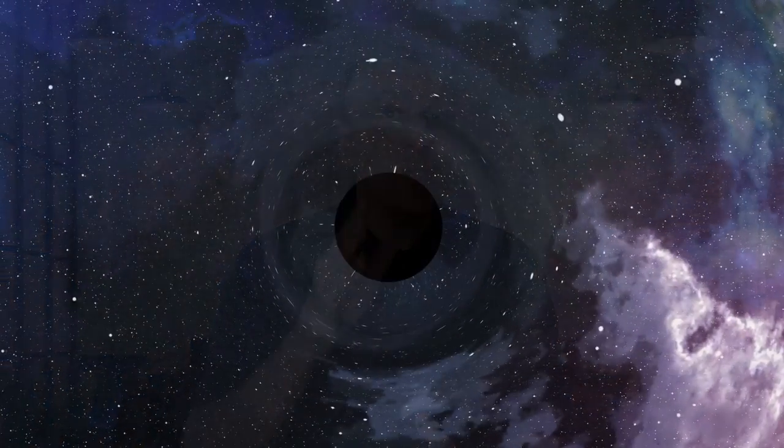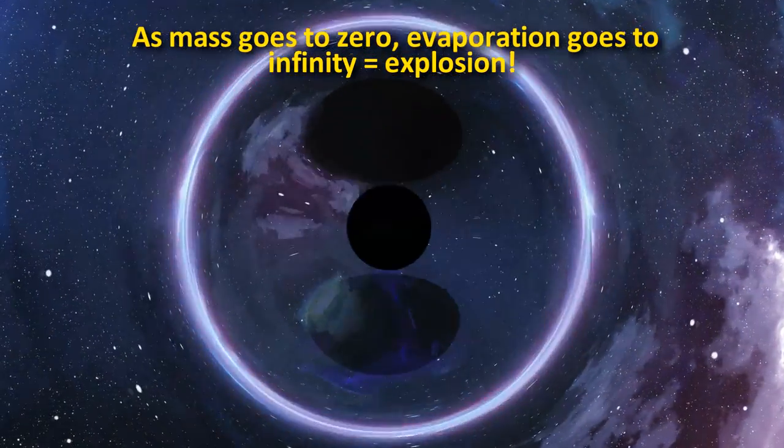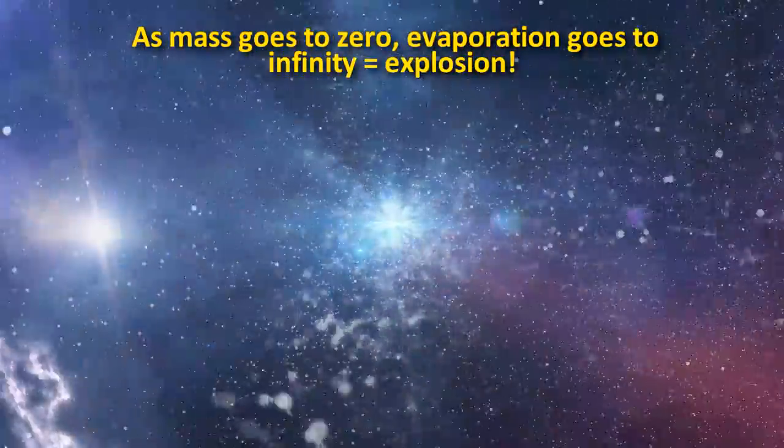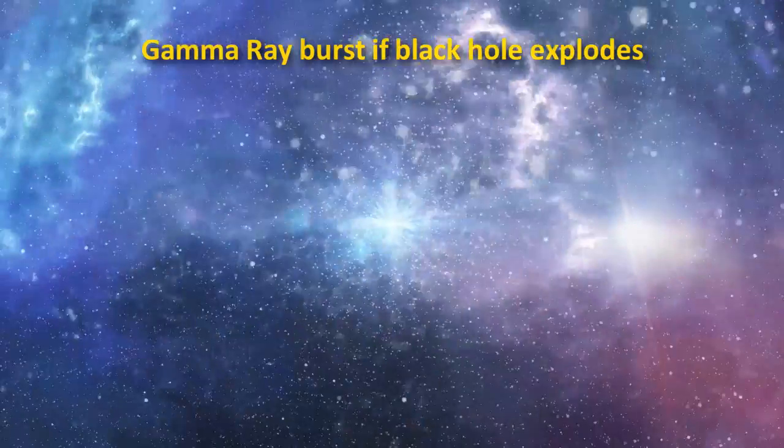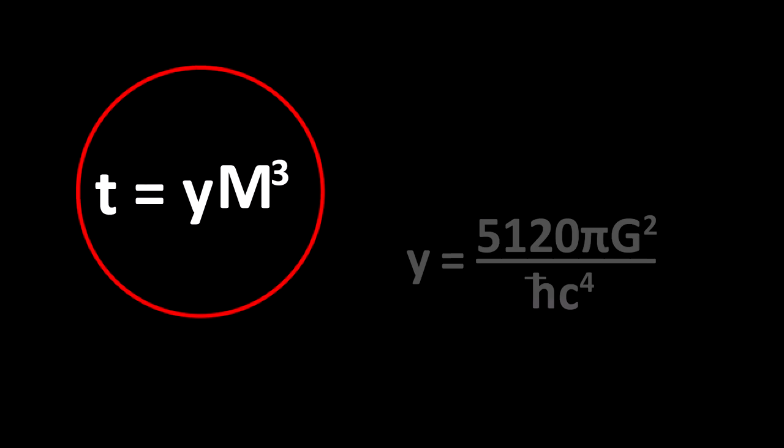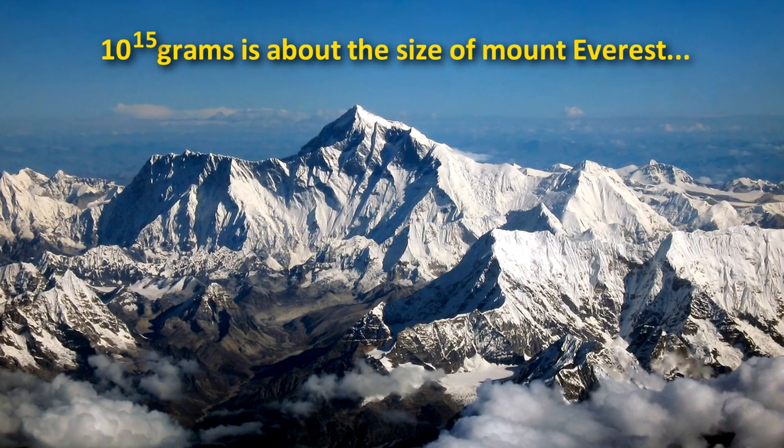Now here's the interesting part. As the mass goes to zero, the evaporation rate goes to infinity. So this tells us that near the end of the evaporation process, we would see an explosion of the black hole, as the mass is quickly used up. This would be seen as a burst of high energy photons, or gamma rays. The lifetime of the black hole is calculated using this equation. If you do the calculations, it means that anything with a mass less than 10 to the 15 grams would have evaporated by now. This would be tiny black holes about as massive as Mount Everest.